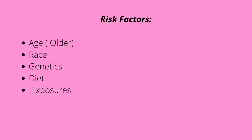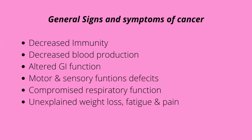General signs and symptoms of cancer — talking about cancer as a whole — include decreased immunity and blood production, since cells are rapidly dividing and not developing well. We'll also see altered GI function, motor and sensory function deficits, and respiratory function changes. One classical symptom is unexplained or unintentional weight loss. For exam questions on general signs and symptoms of cancer, it's normally unexplained weight loss, fatigue, and pain.